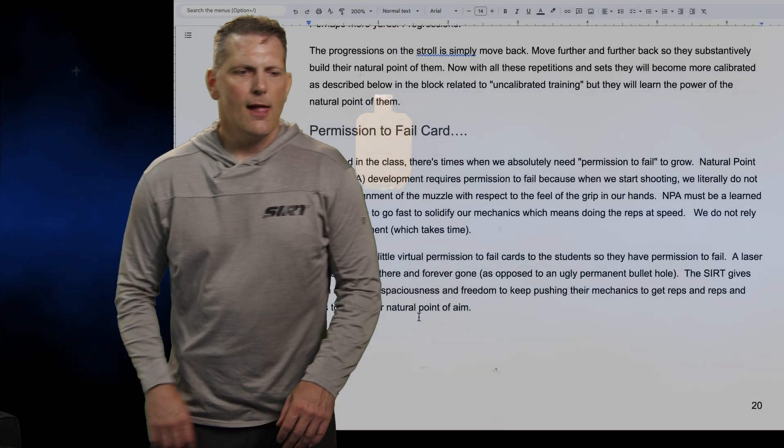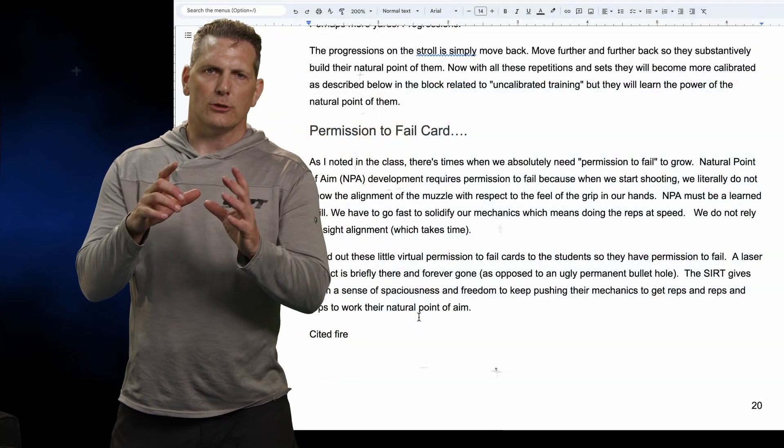So we talked a lot about natural point of aim, and there's just two things I want to touch on here. Natural point of aim is what we call an open loop or a closed loop system.